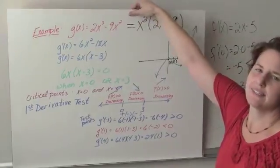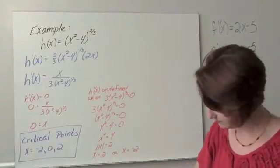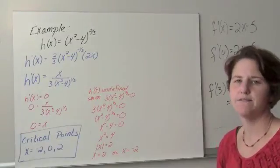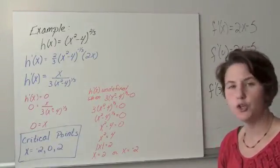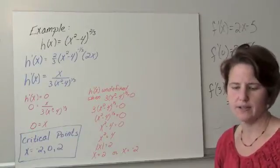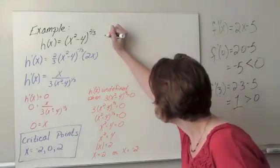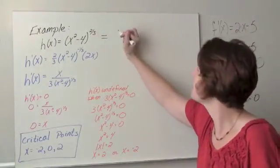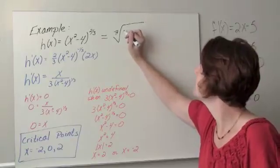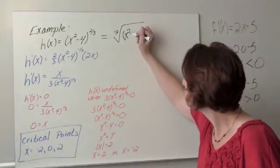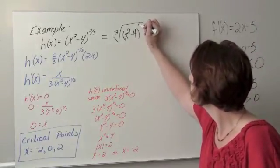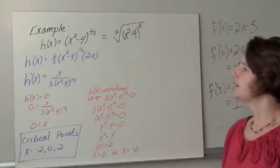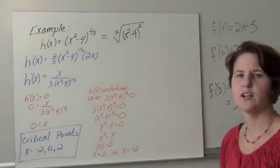One final example. h(x) equals (x squared minus 4) to the 2/3 power. Another way to write this, it's going to be more handy with the 2/3 power, but this is the same thing as the cube root of (x squared minus 4) squared. Okay, let's find our critical points.